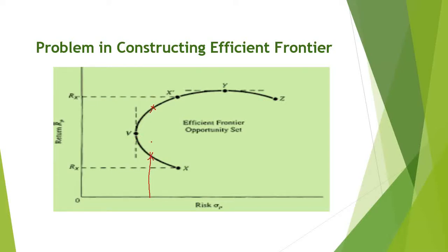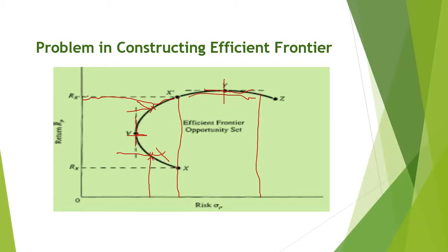When you build an efficient frontier, you get a set of points. Comparing two points at the same risk level: one point is efficient and the other is not, because for the same level of risk you get more return at the efficient point. The last point is where the frontier transitions — if you draw a slope there it becomes zero, and beyond that point the slope approaches one over zero, or infinity.